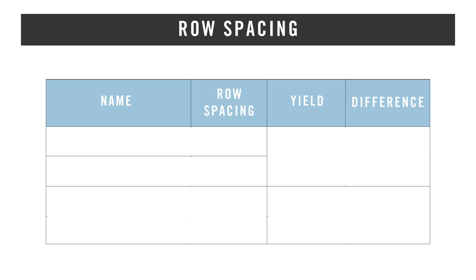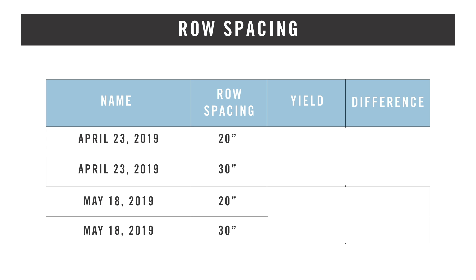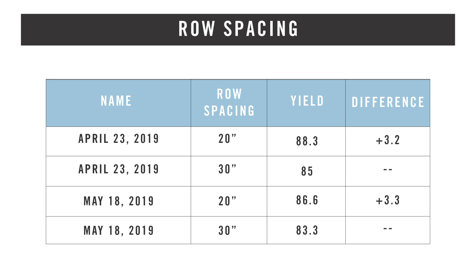Next we compared row spacing for both the April 23rd and May 18th plant dates — a traditional 30 inch row versus a 20 inch row. On both planting dates we saw a three bushel advantage to the 20 inch row over the 30 inch row. Thinking about advantages to a narrower row — weed pressure, sunlight capture, and other factors — if we can add three bushel just by narrowing up our rows, it's definitely something to consider in 2020.